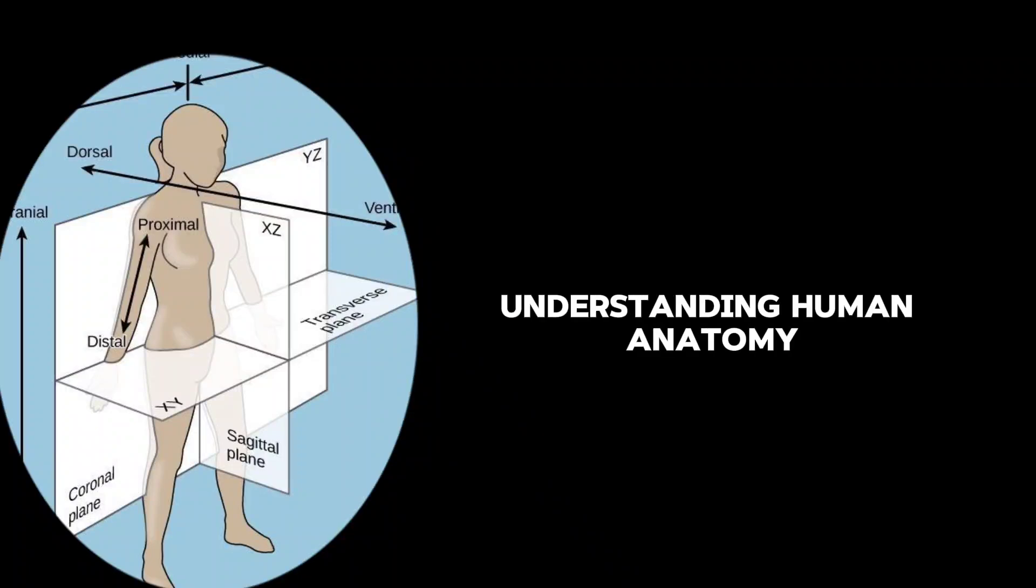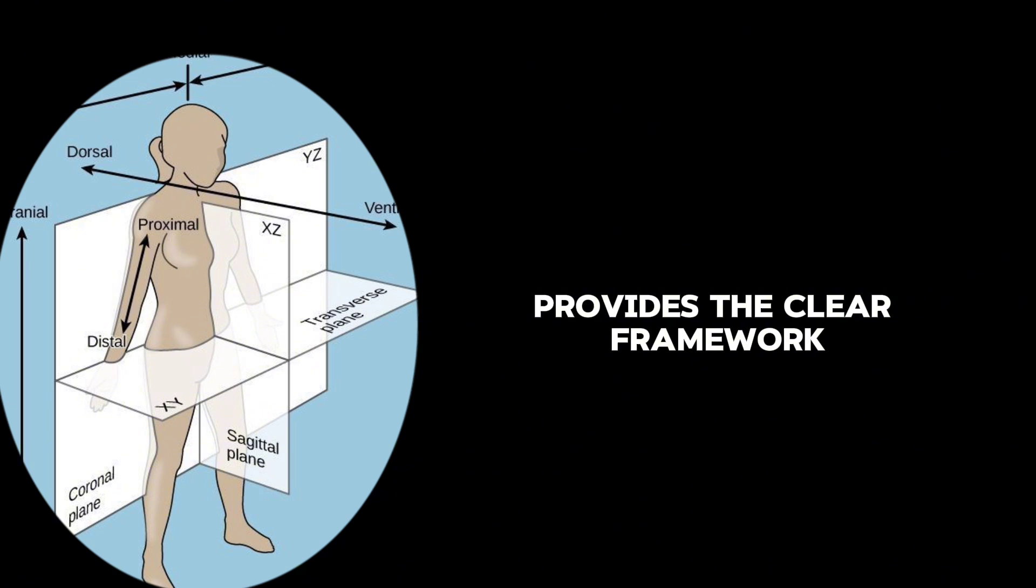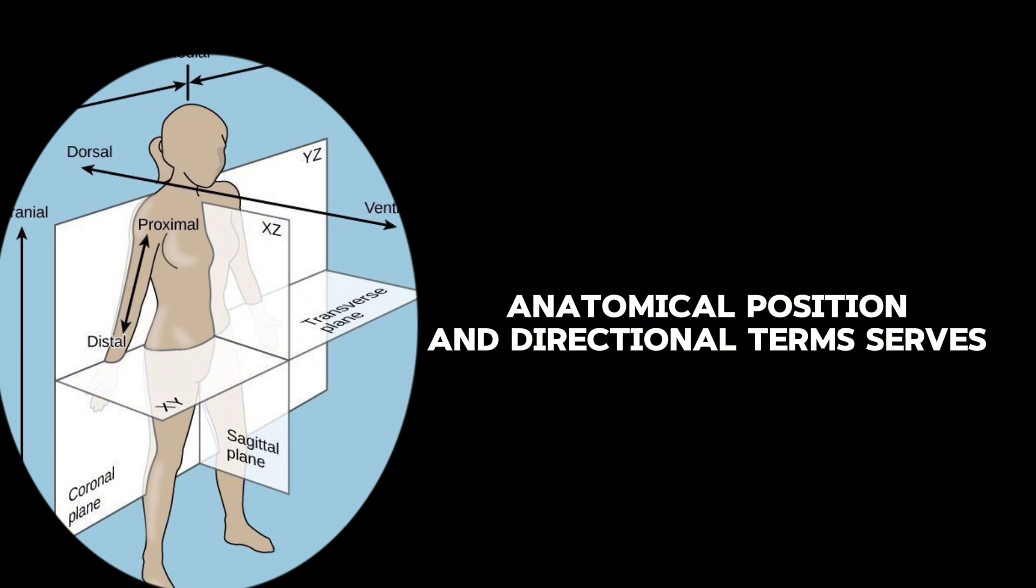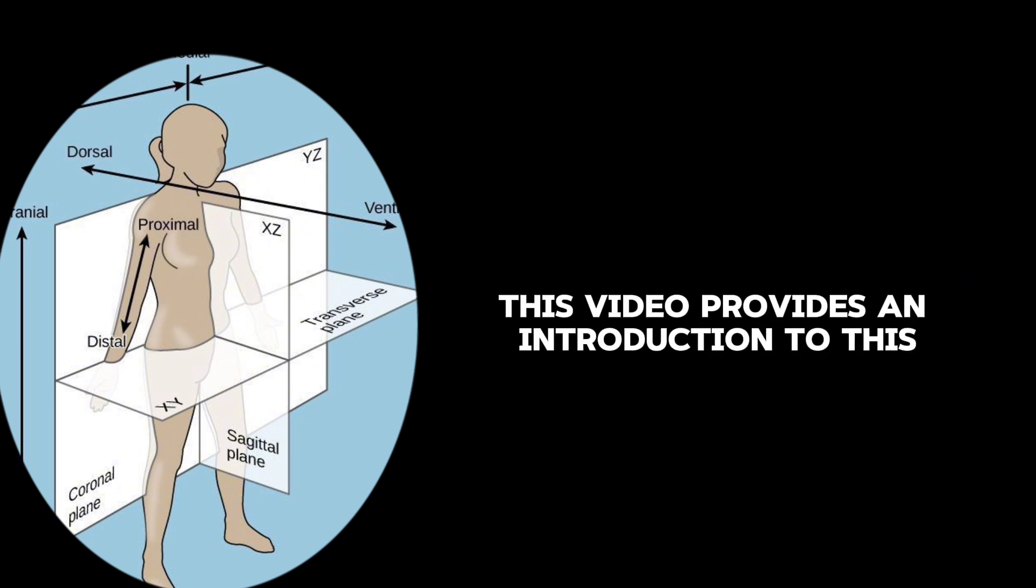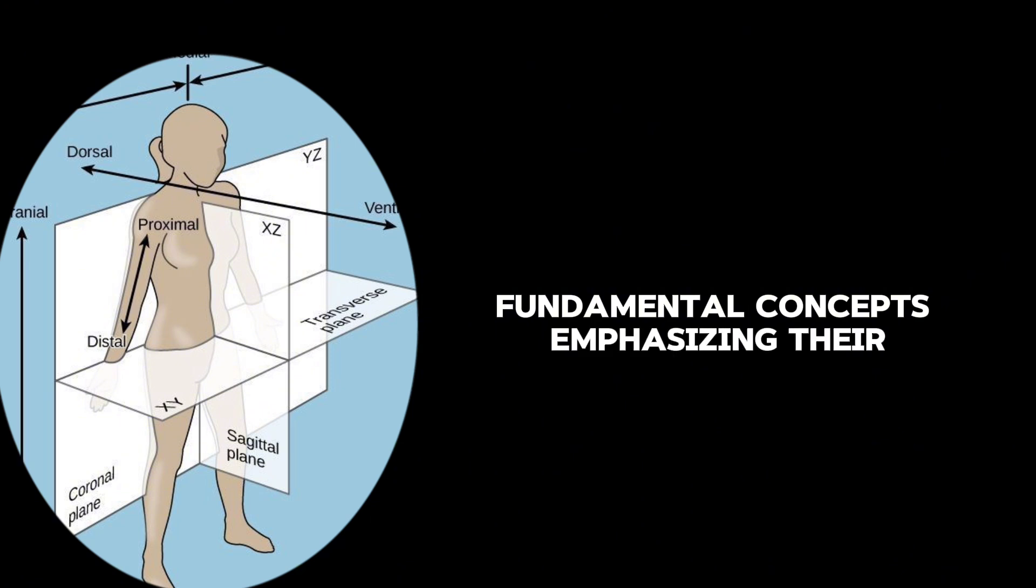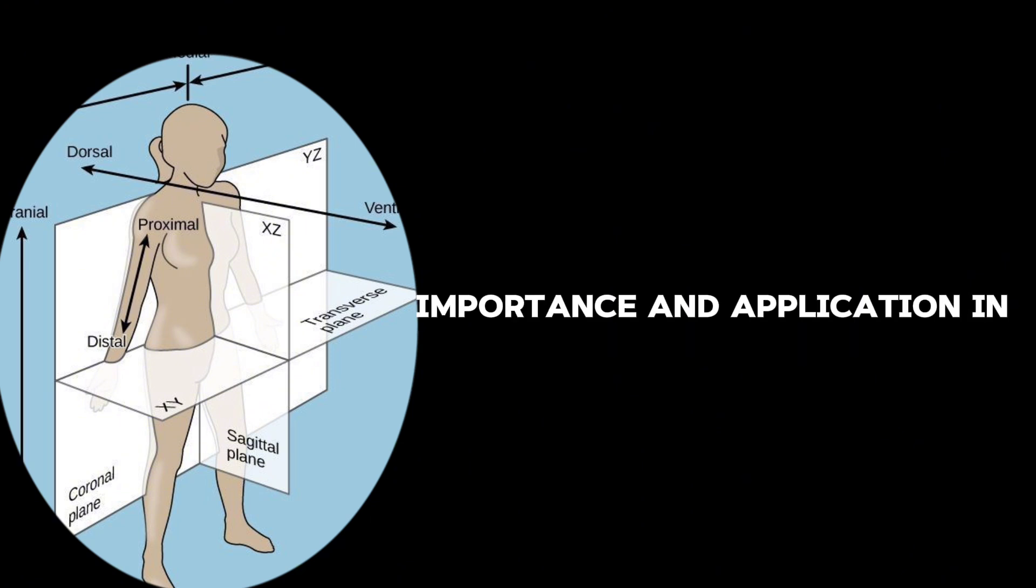Understanding human anatomy provides a clear framework for describing the body's position and relationships between its parts. Anatomical position and directional terms serve as a standardized language in medicine and biology, allowing professionals to communicate clearly and avoid confusion. This video provides an introduction to these fundamental concepts, emphasizing their importance and application in anatomy and physiology.